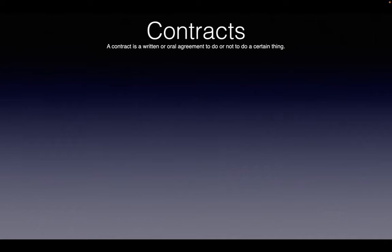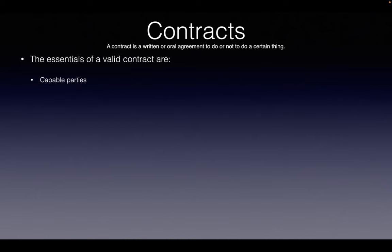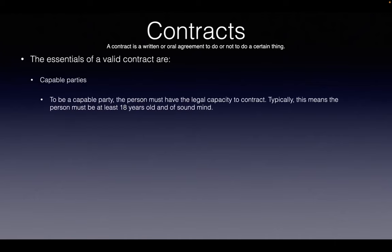A contract can either be written or oral — I will do this, or I won't do this. When we start thinking about contracts, we have these essentials of what a valid contract is. Firstly, we need to have capable parties. To be a capable party, the person must be of legal capacity to contract — 18 years of age or older, and of sound mind.